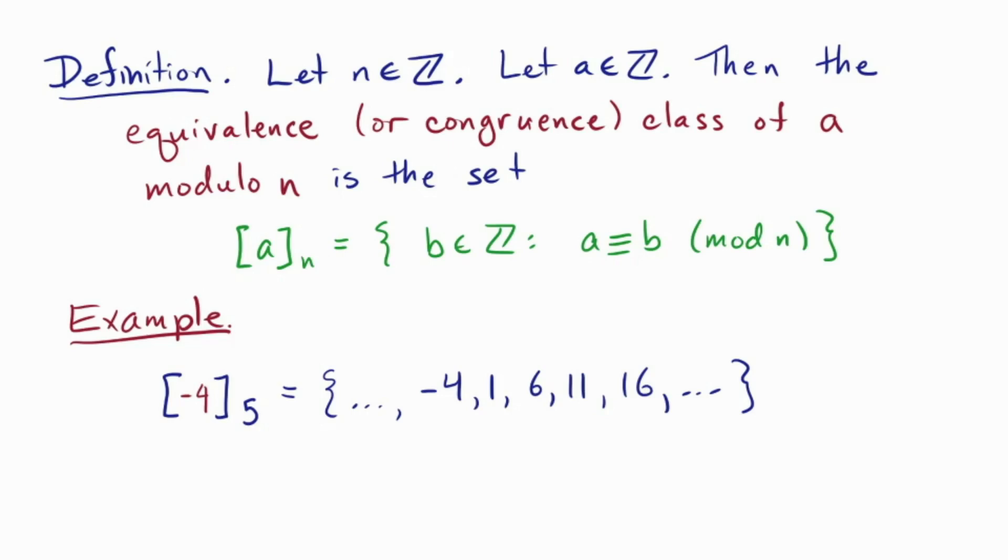A side note: when you're studying equivalence relations, you'll prove rigorously what seems apparent here, which is that the distinct equivalence classes are disjoint, i.e. the rays don't cross each other at any integers. Okay, for practice, stop the video now and compute the equivalence class of 3 modulo 8. Here's my answer.